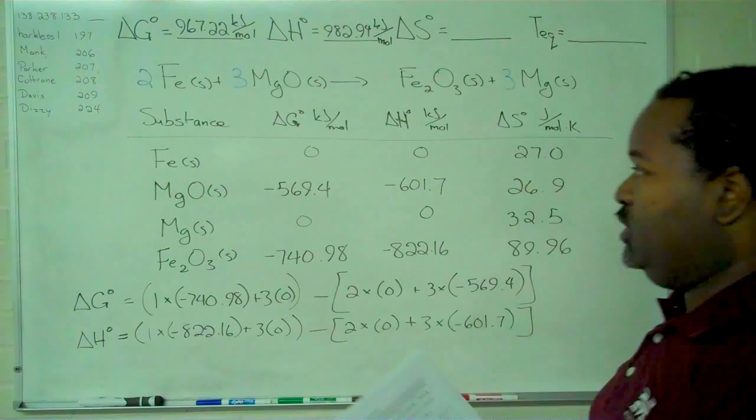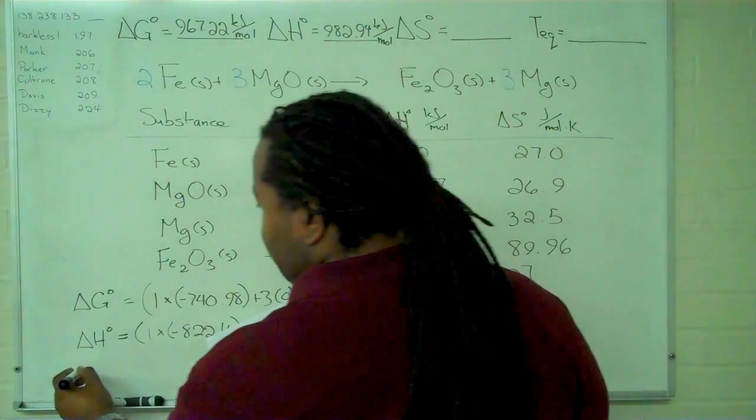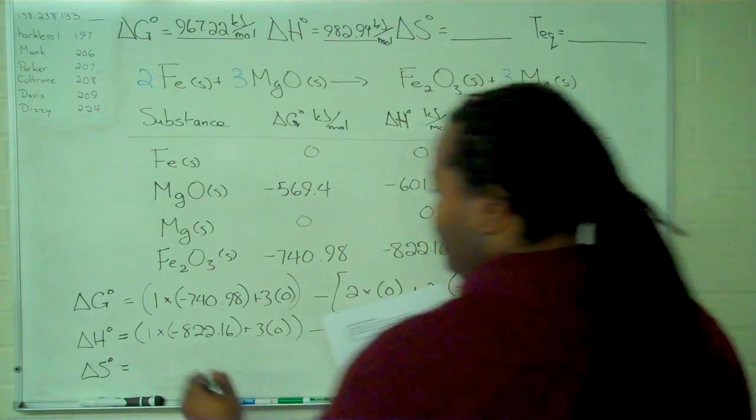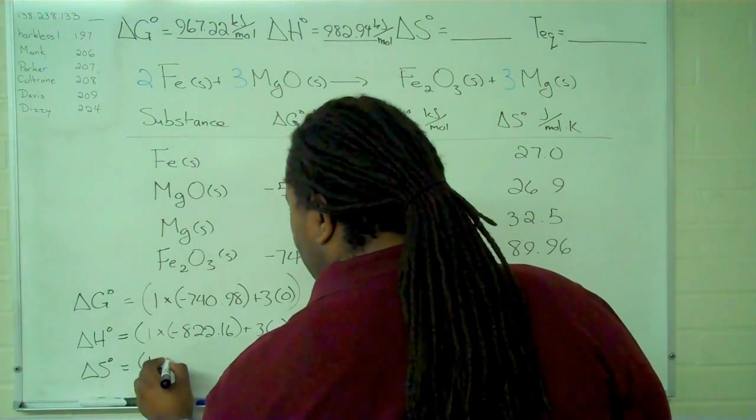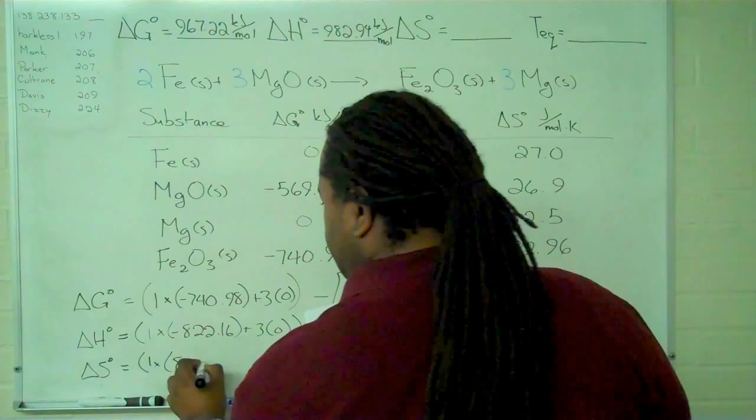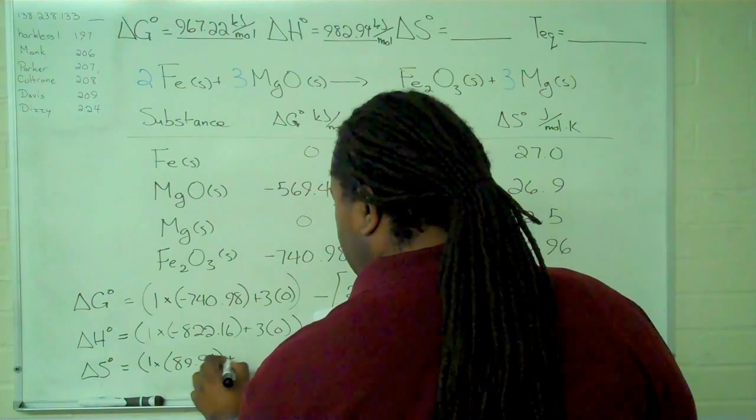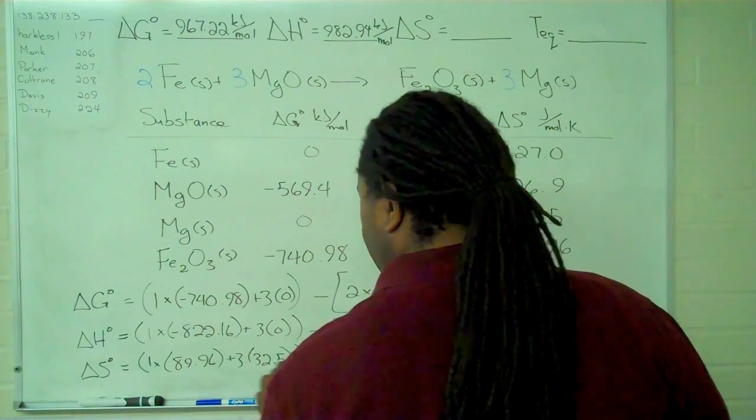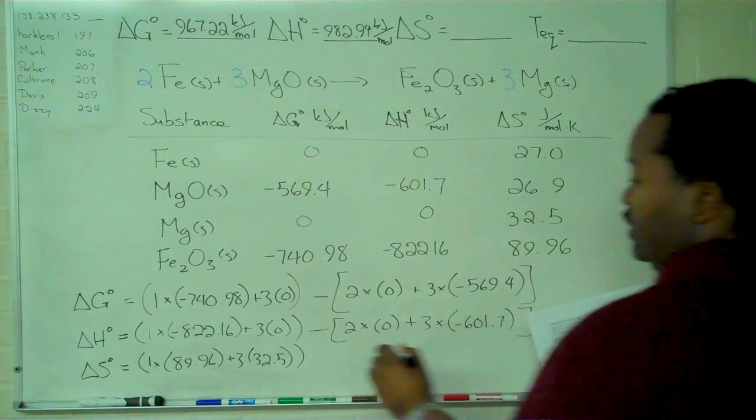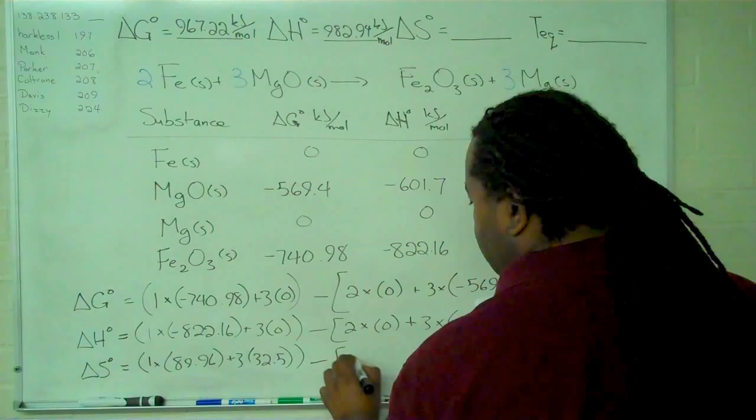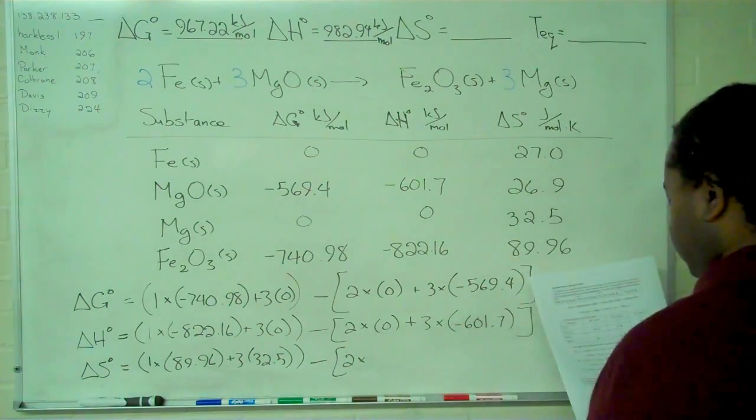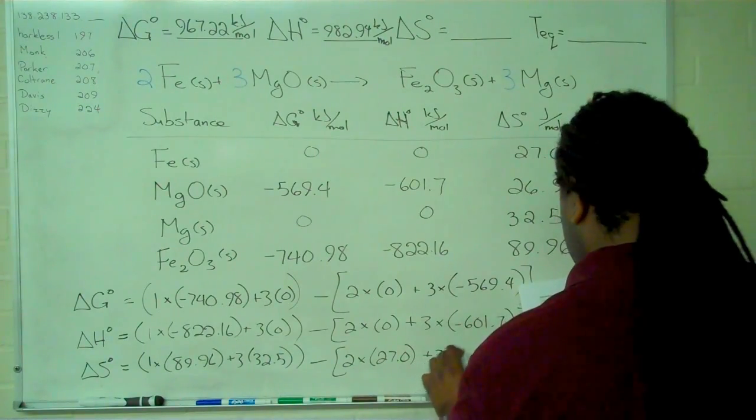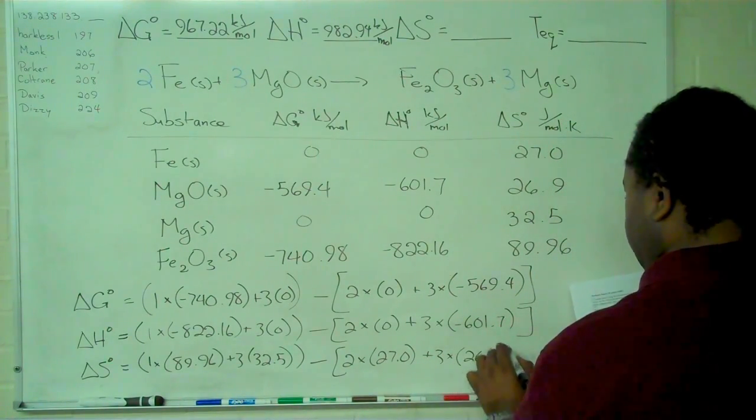We do the same thing for the entropy right down here at the bottom of the board. And we find 1 times 89.96 plus 3 times 32.5. So that's the stoichiometric sum of products minus our stoichiometric sum of reactants: 2 times 27.0 plus 3 times 26.9.